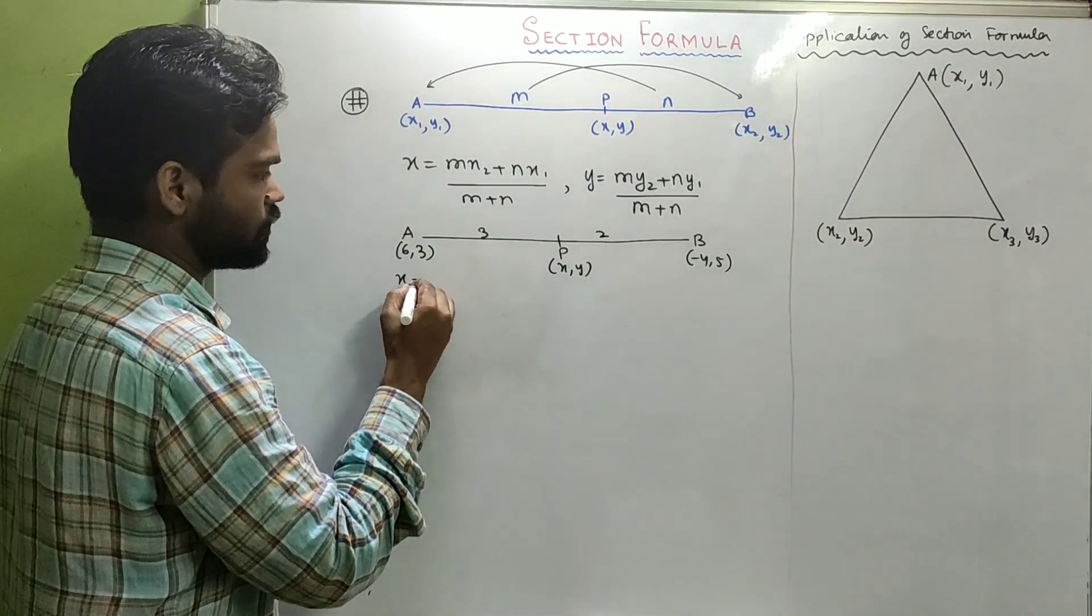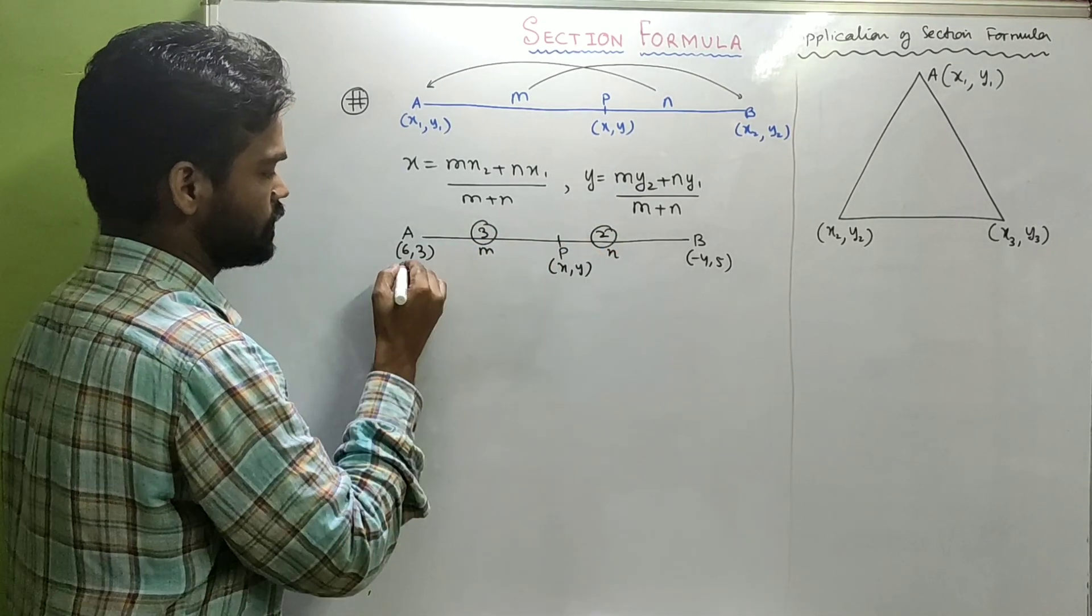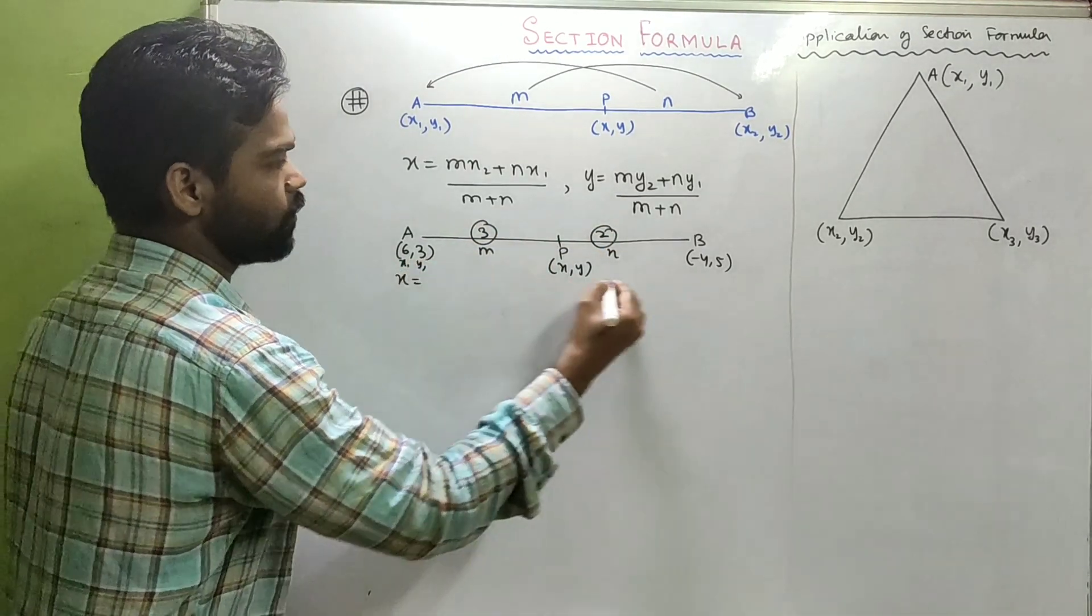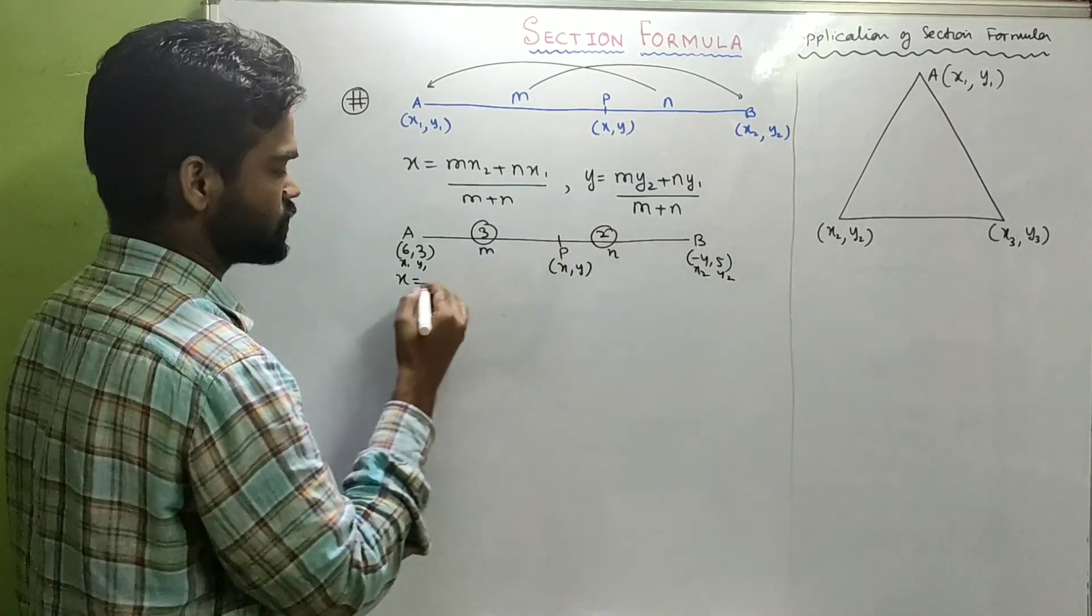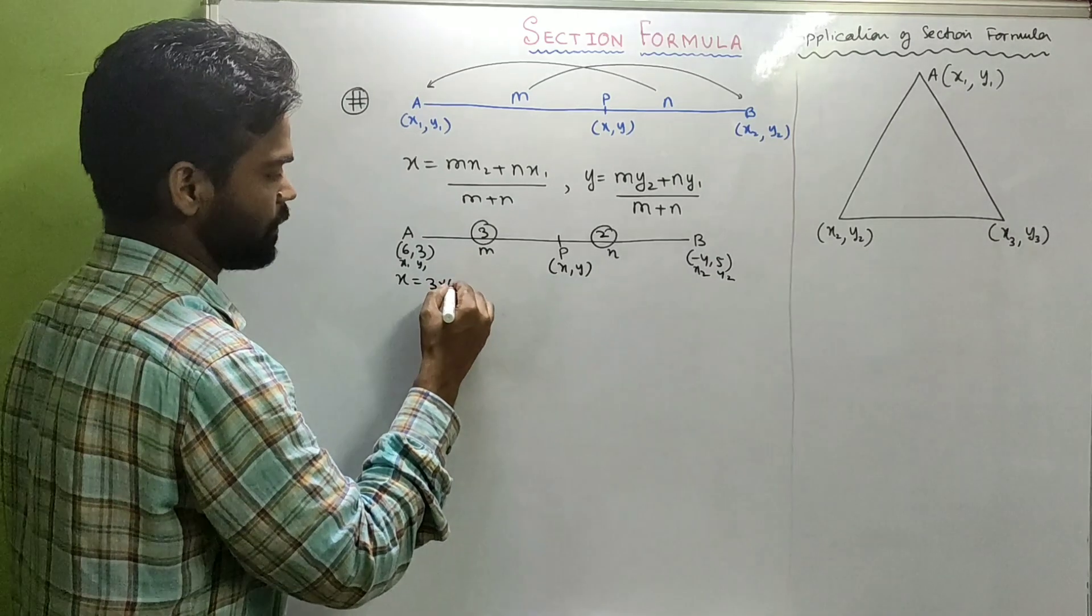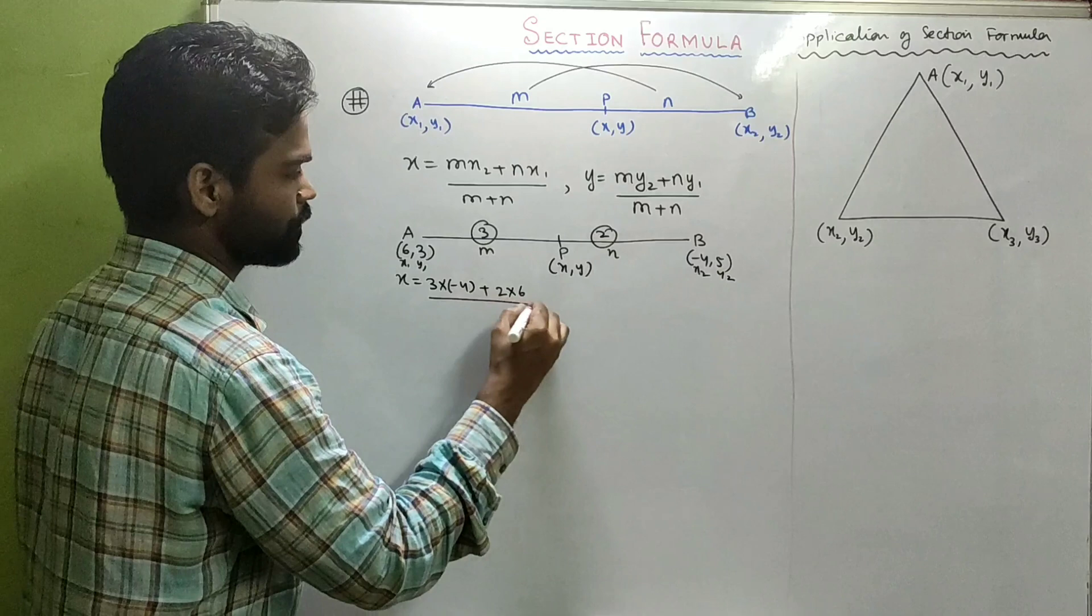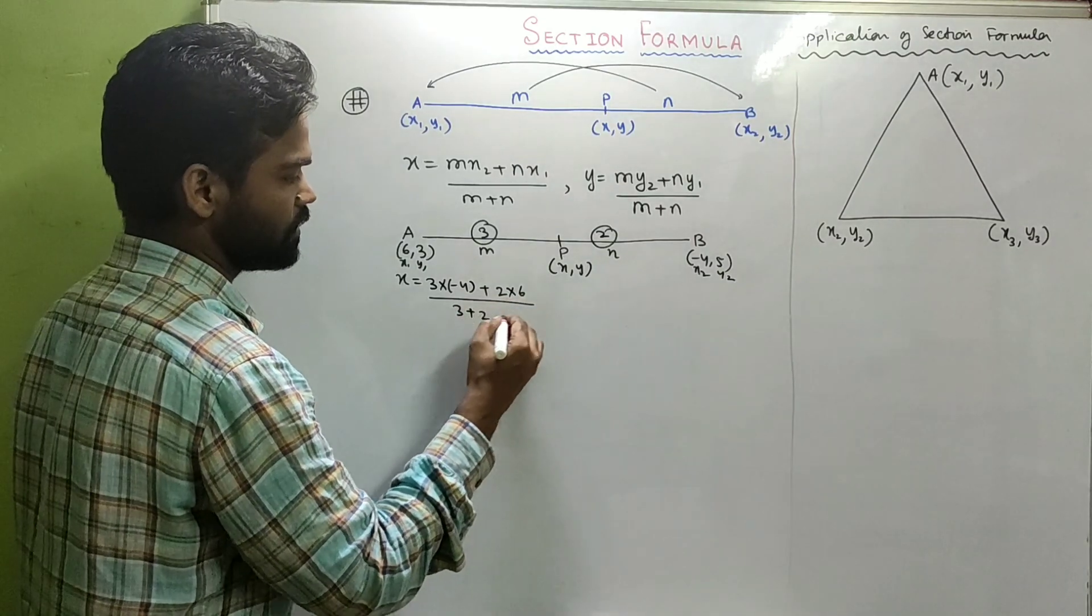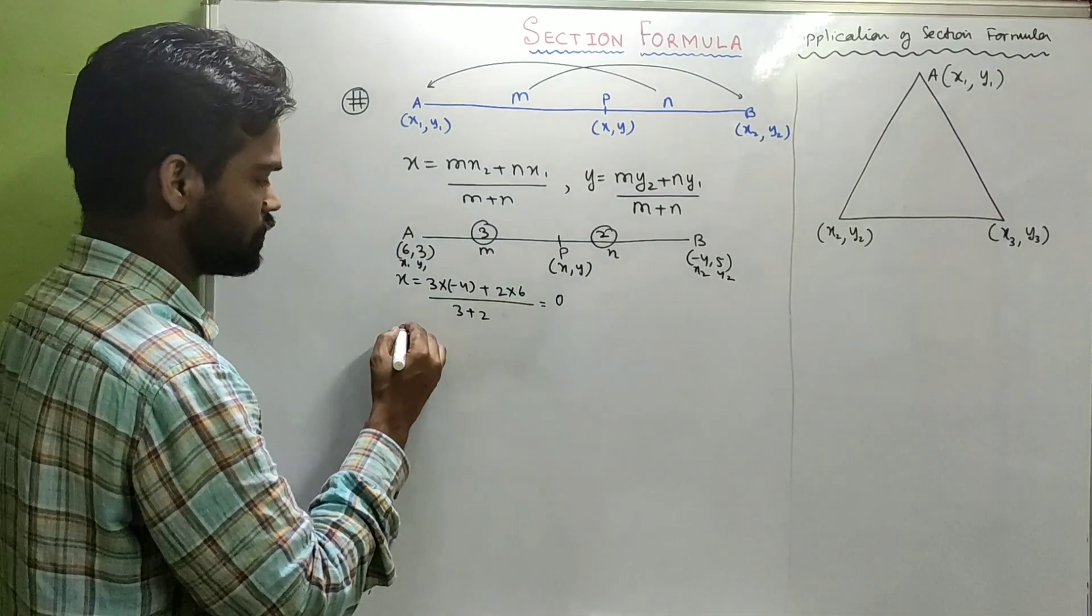By section formula, X equals: this is your M, N. This is X1, Y1, X2, Y2. So X will be MX2, that's 3 multiplied by -4, plus NX1, that's 2 multiplied by 6, by M plus N. That's -12 plus 12, that's 0 by something is 0 only.